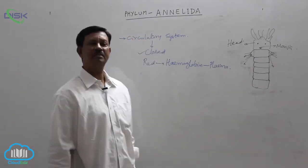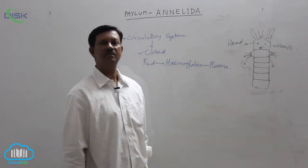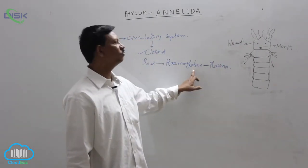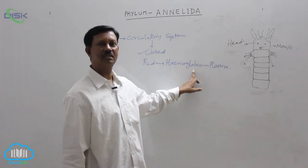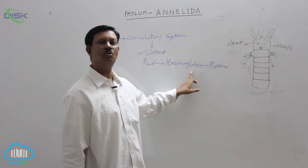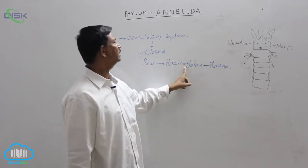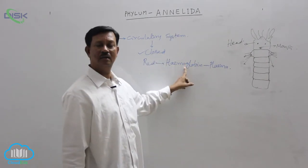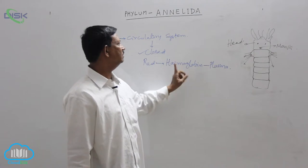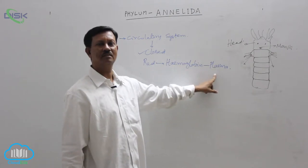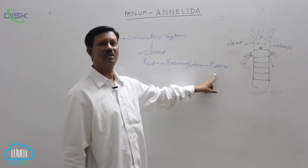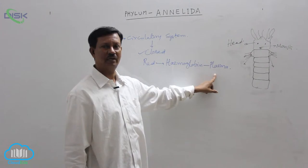Usually in vertebrates, hemoglobin is found in the RBC — red blood corpuscles. But here, no red blood corpuscles are present in this phylum. Blood is red in color due to the presence of hemoglobin which is dissolved in the plasma. This is a special character when compared to other phyla.